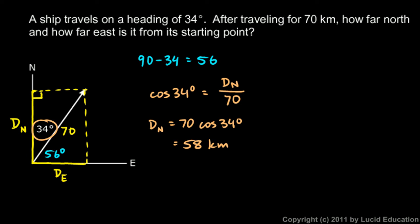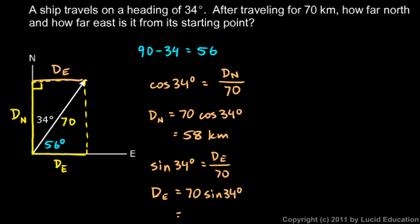And then I can also think about the sine of the 34 degree angle. I can say the sine of 34 degrees. Here's our 34 degree angle. This is the opposite side, and you should see from this diagram that this opposite side here is the same length as this here. So I can call this length here DE. So sine 34 is opposite over hypotenuse. In this case, that's DE, the distance east, divided by 70. So the distance east ends up being 70 times the sine of 34 degrees.